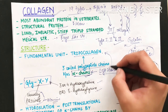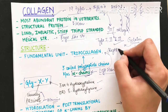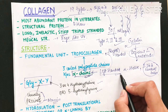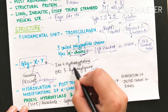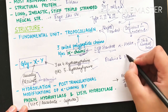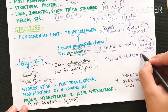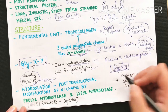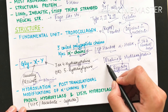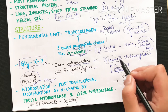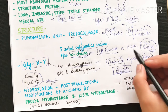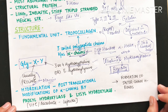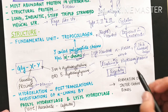The individual alpha chain is left-handed, but tropocollagen itself is right-handed. Proline and hydroxyproline provide rigidity to the collagen structure. Proline is non-polar and is an alicyclic compound — it forms a cyclic structure which provides rigidity.